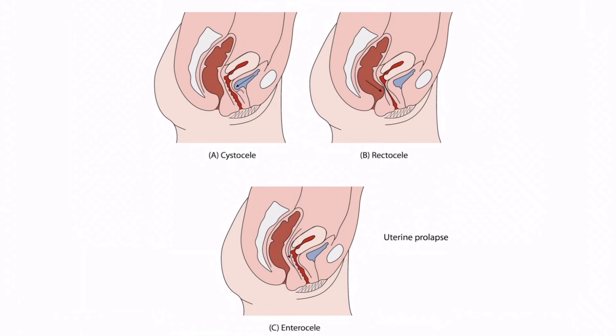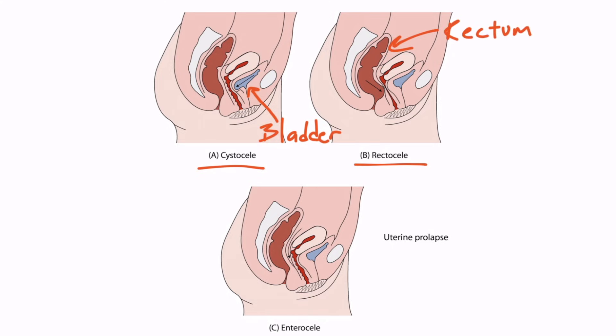This image depicts the various types of pelvic organ prolapse. In the top left image, cystocele, we can see the bladder protruding posteriorly into the vaginal wall. In the top right, rectocele, the rectum is protruding anteriorly into the vaginal wall. In the bottom, enterocele, the arrow indicates the intestines pressing downward into the vaginal wall. Weakness to supporting structures in the pelvis allows for prolapse of nearby organs into the vaginal wall.